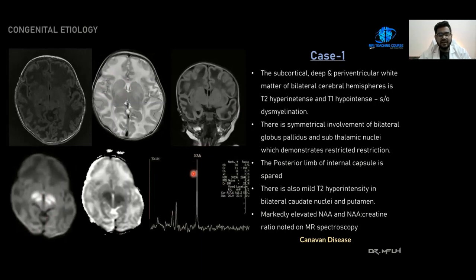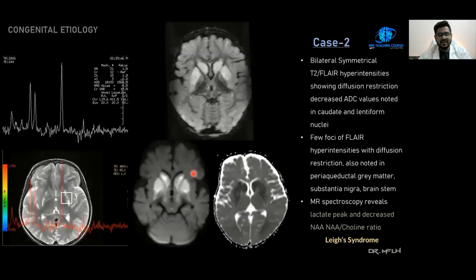On MR spectroscopy, an elevated NAA peak is seen and the NAA-to-creatine ratio is also elevated, consistent with Canavan's disease. The second congenital case shows bilateral symmetrical T2 and FLAIR hyperintensities with diffusion restriction and decreased ADC values in the caudate and lentiform nuclei. A few foci of FLAIR hyperintensity are also noted in the periaqueductal gray matter, substantia nigra, and brainstem. On MR spectroscopy, a lactate peak and decreased NAA-to-choline ratio are seen. This is a case of Leigh syndrome.